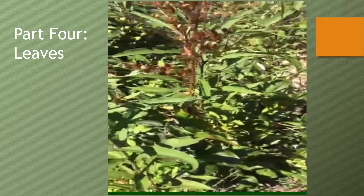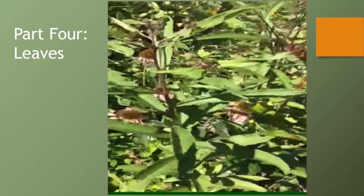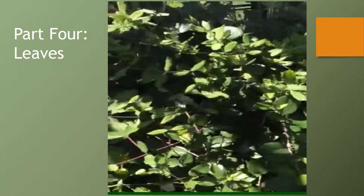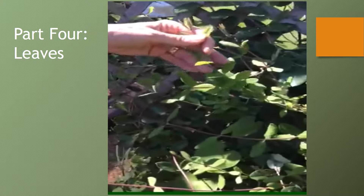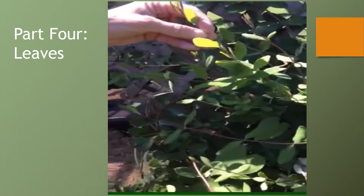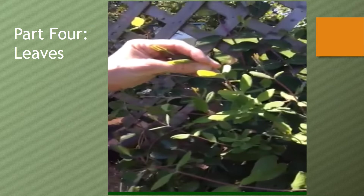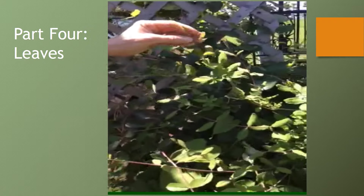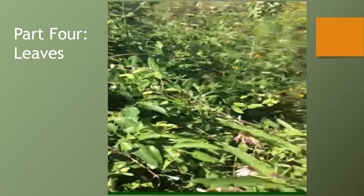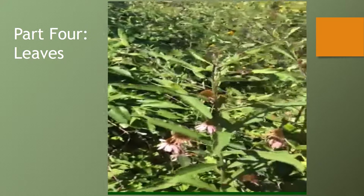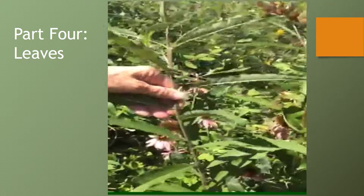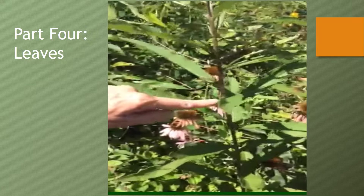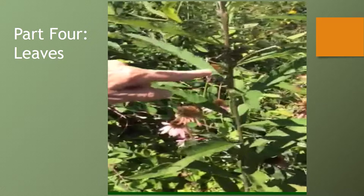Leaves can be simple or compound. They can have an opposite arrangement — here's a great example. See how they're opposite on this stem? Or they can have an alternate arrangement on this stem. See how they're not exactly opposite each other, but they are alternate.